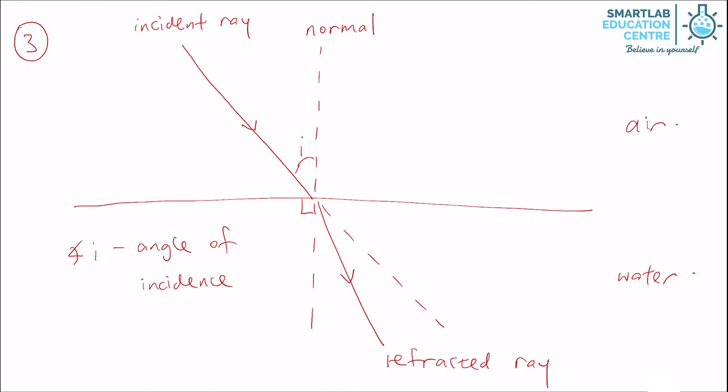The angle between the normal and the refracted ray, we label angle r, is called the angle of refraction. Notice that because the light bends towards the normal, angle i is greater than angle r.